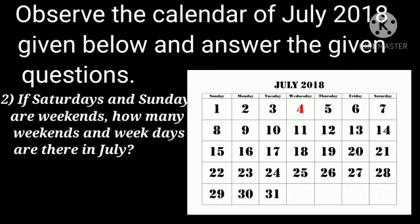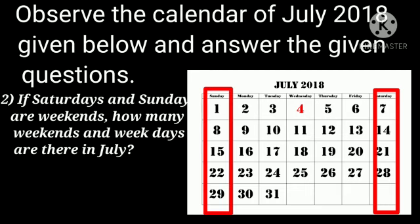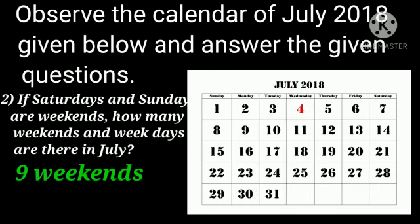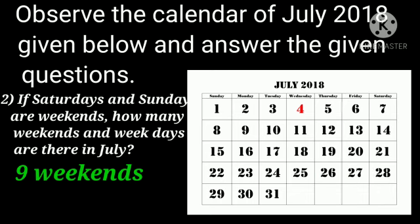Question number two: if Saturdays and Sundays are weekends, how many weekends and weekdays are there in July? Weekends means Saturdays and Sundays; the remaining days are weekdays. There are 4 Saturdays and 5 Sundays, giving 9 weekends. For weekdays: 5 Mondays + 5 Tuesdays = 10, plus 4 Wednesdays = 14, plus 4 Thursdays = 18, plus 4 Fridays = 22. Therefore, there are 22 weekdays and 9 weekends.